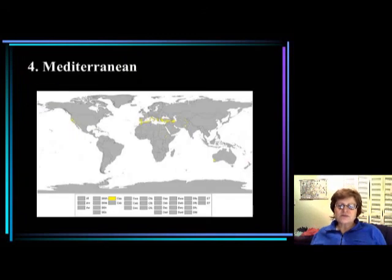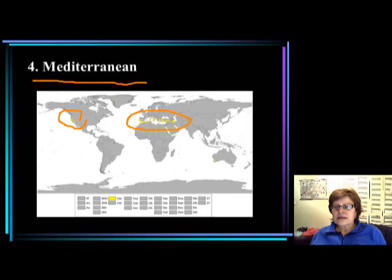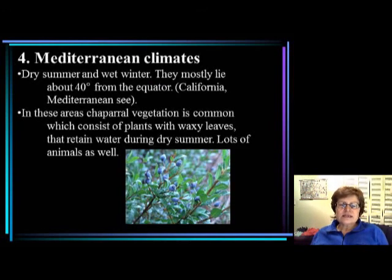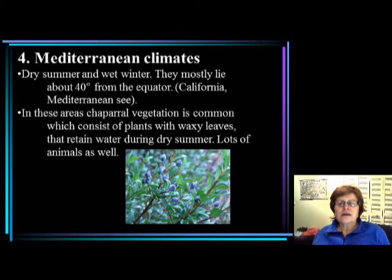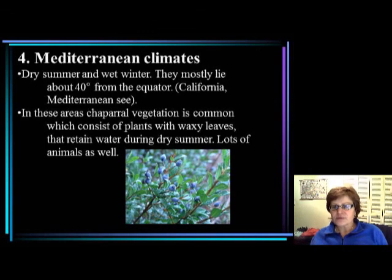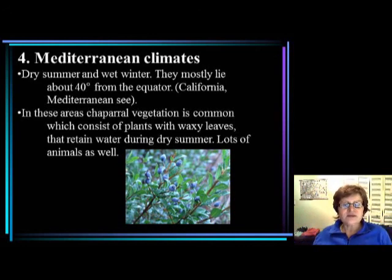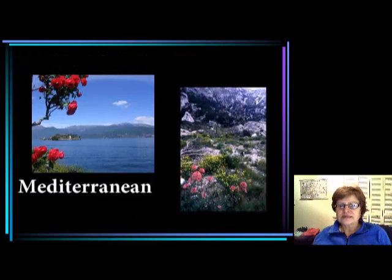The next climate zone is the mediterranean, most common around the Mediterranean Sea but also found in California. The characteristic is that summer is relatively dry and winter is wet. Most mediterranean climates lie around 40 degrees from the equator. A very characteristic vegetation is the chaparral — plants with waxy leaves that can withstand the long dry summer because the wax holds in moisture. The mediterranean climate also has many animals. That concludes this segment — see you for now.